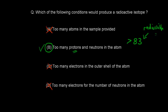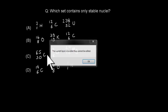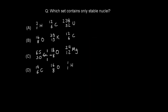Next question: which set contains only stable nuclei? A. Hydrogen-2, Carbon-12, and Uranium-238. B. Oxygen-16, Potassium-39, Carbon-12. C. Cobalt-65, Oxygen-18, Magnesium-24. D. Carbon-14, Oxygen-16, and Hydrogen-1.